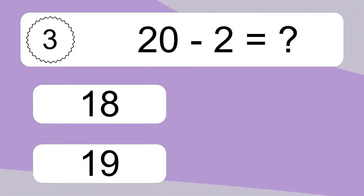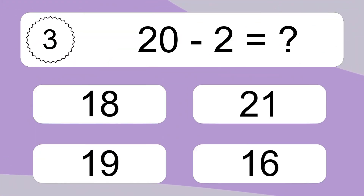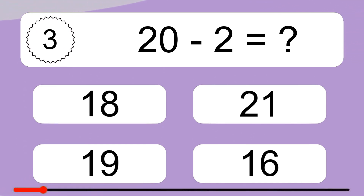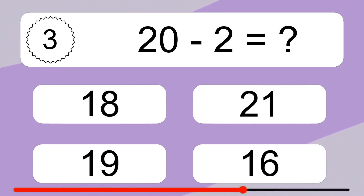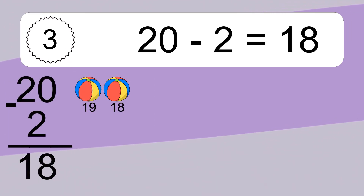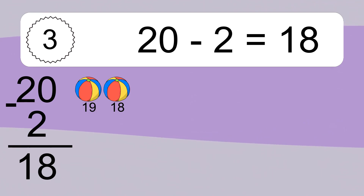20 minus 2 equals what? 20 minus 2 equals 18. Let's count it. 19, 18.